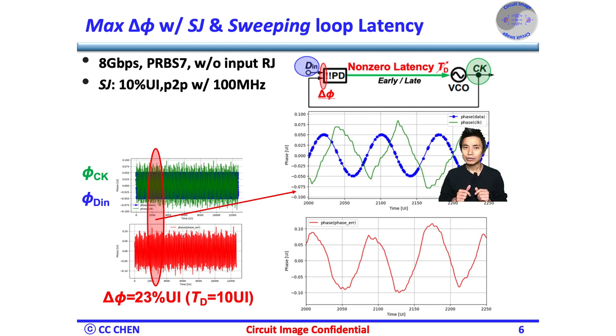Intuitively, the phase correction information sent to the VCO was for 10 bits of duration time before, not at the moment. So, when the VCO starts to correct the phase error, the data's input phase already moves in the opposite direction.